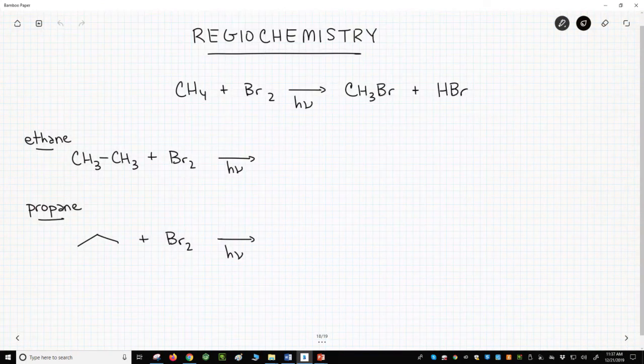At the top of the screen, we have the radical halogenation, specifically a bromination, of methane. This reaction hides some of the details of the reaction. Methane is such a simple molecule. What if we do the reaction on larger alkanes?